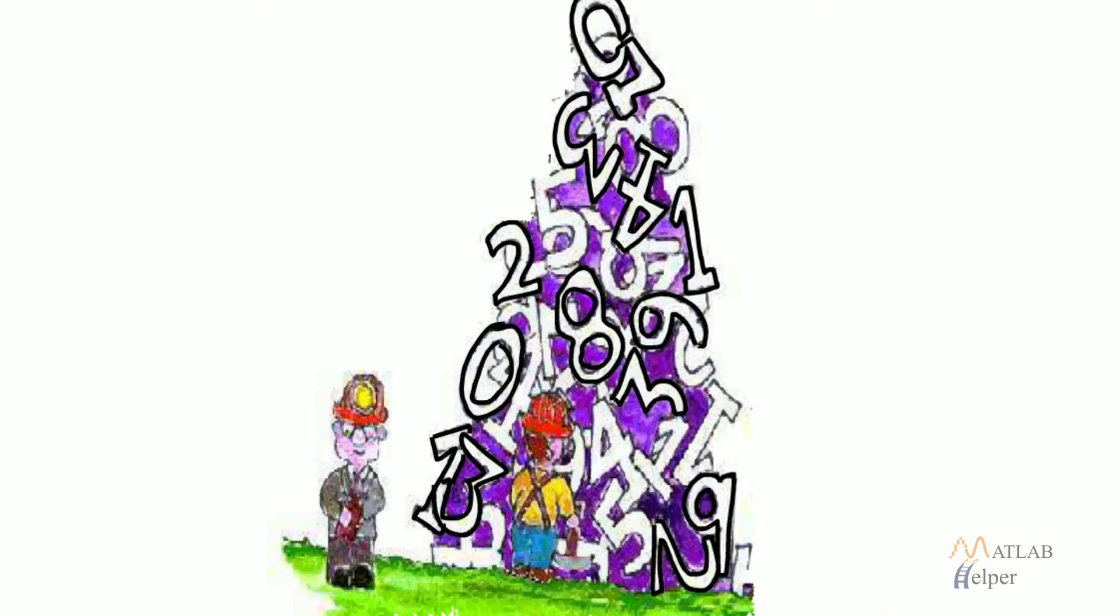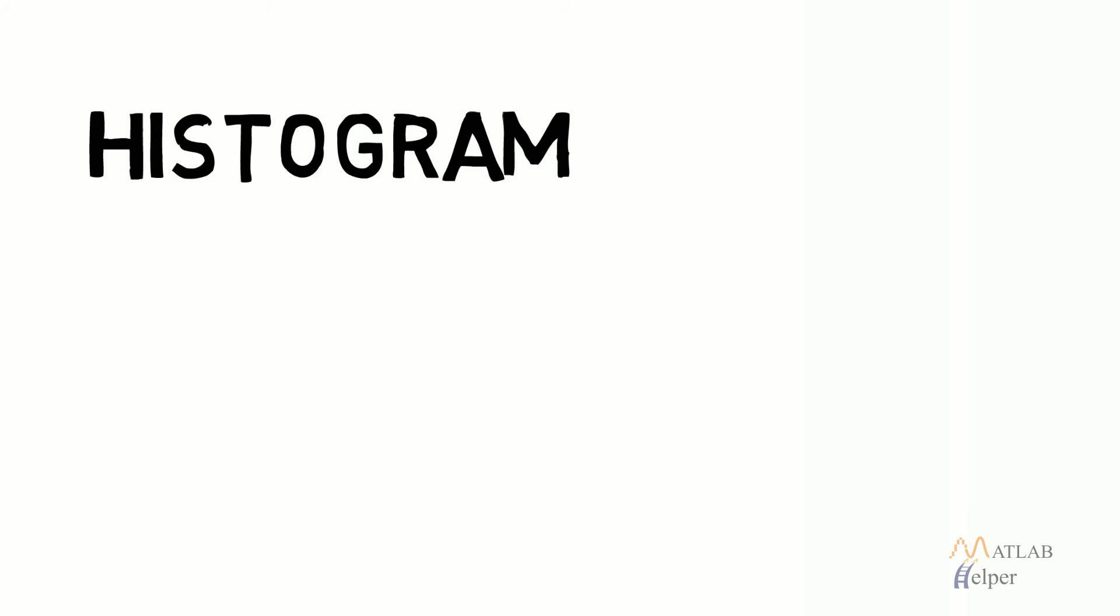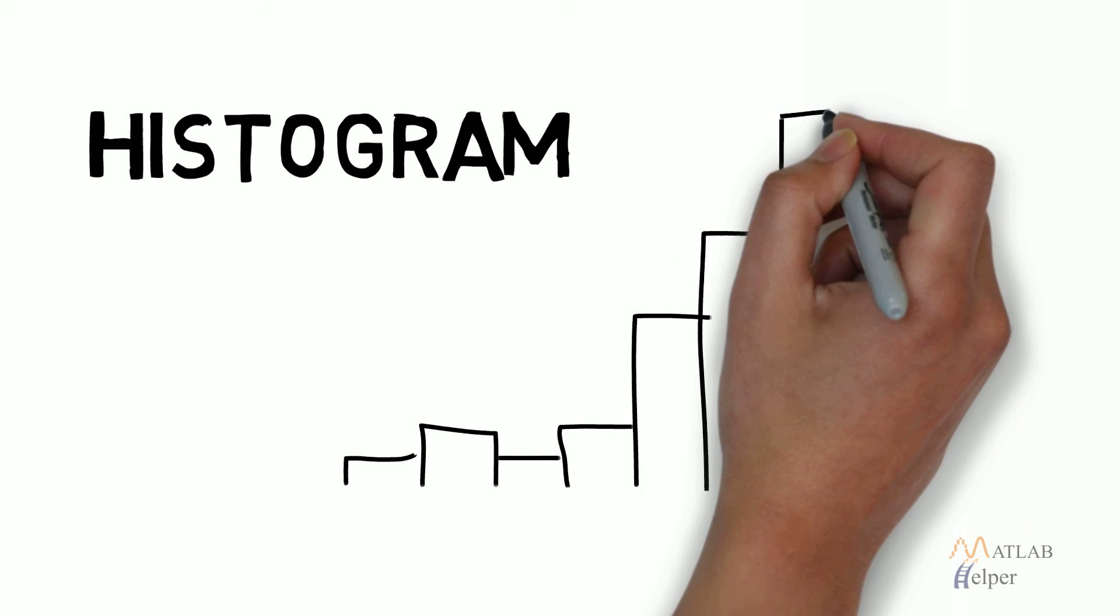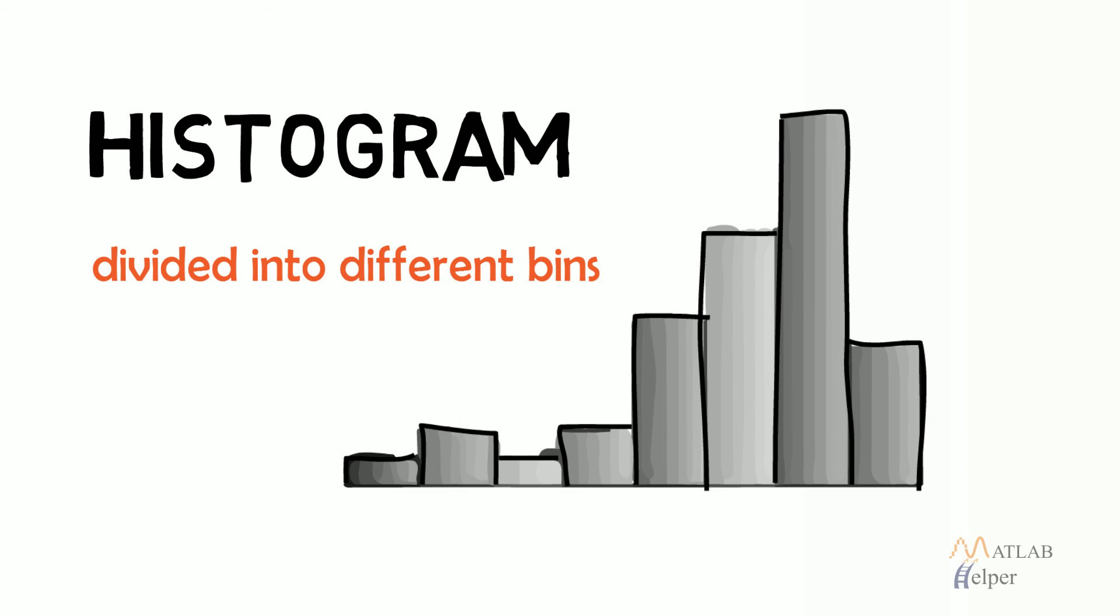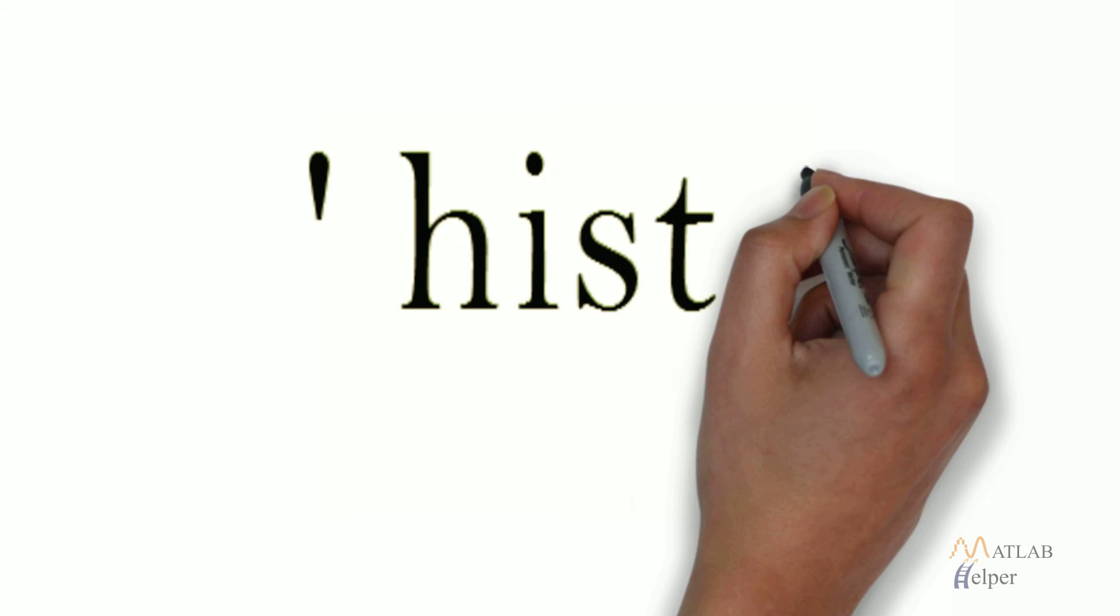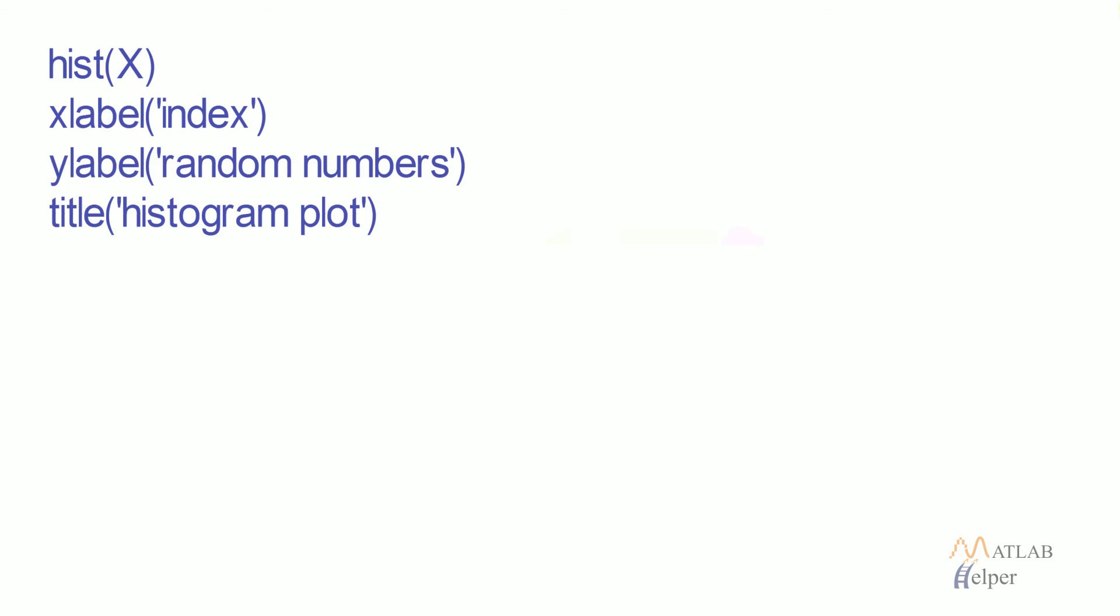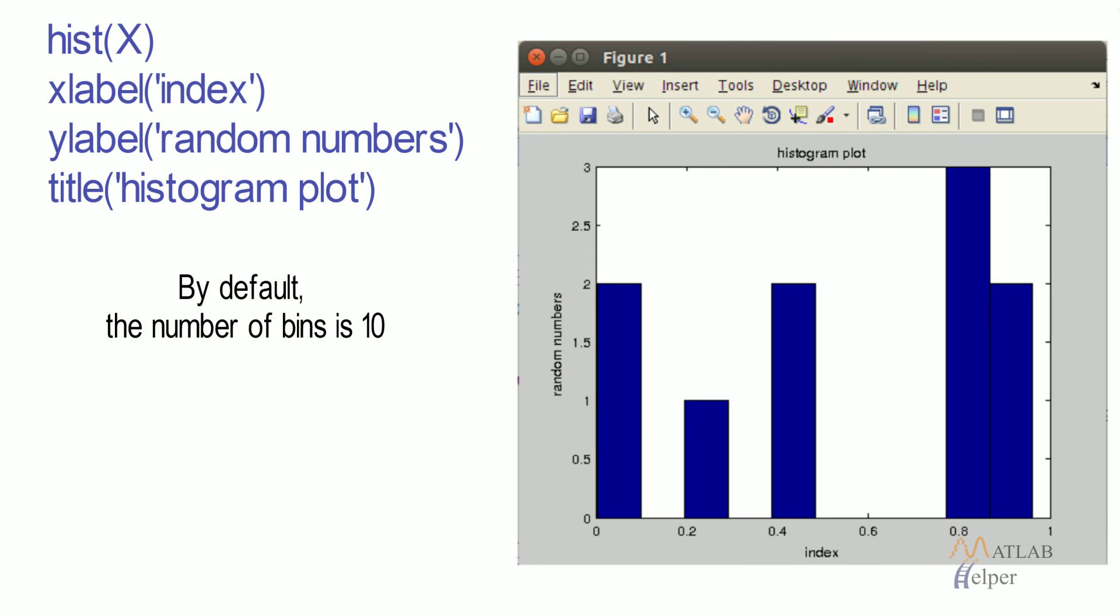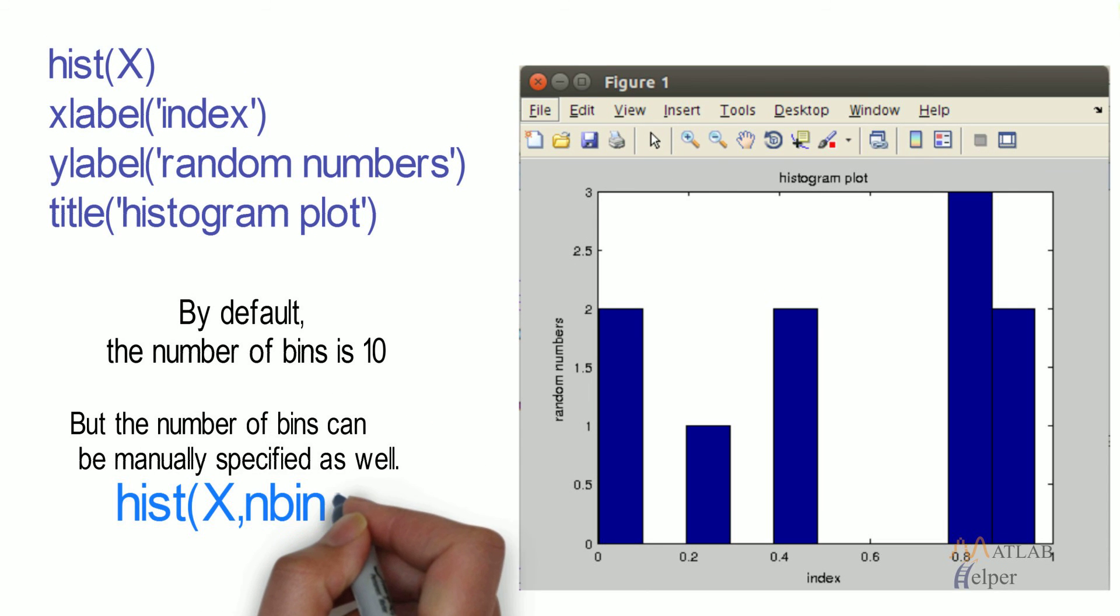Another way to represent data is in the form of a frequency histogram. To create a frequency histogram, the entire range of values is divided into different bins and frequency of values lying in every bin is calculated. The bar plot of this frequency gives the histogram. In MATLAB, this can be done using the function hist. By default, the number of bins is 10, but the number of bins can be manually specified as well.